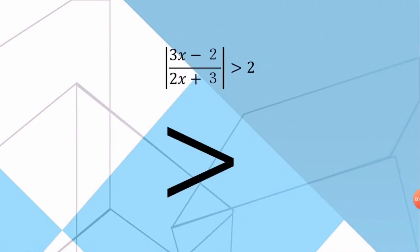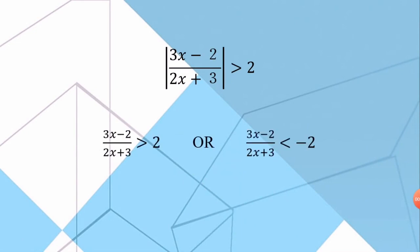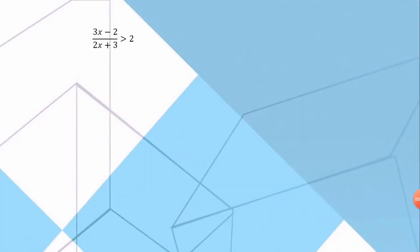If the modulus of (3x - 2)/(2x + 3) is greater than 2, so we need to split them into two inequalities as usual and the term OR comes in here due to the 90 degrees rotation of the greater than symbol. Now, let us solve the left hand side inequality first.